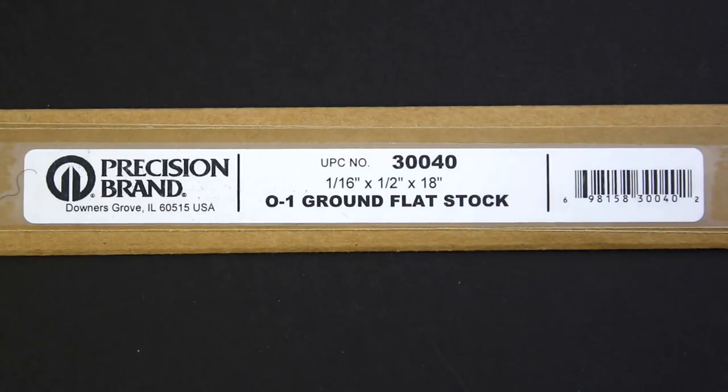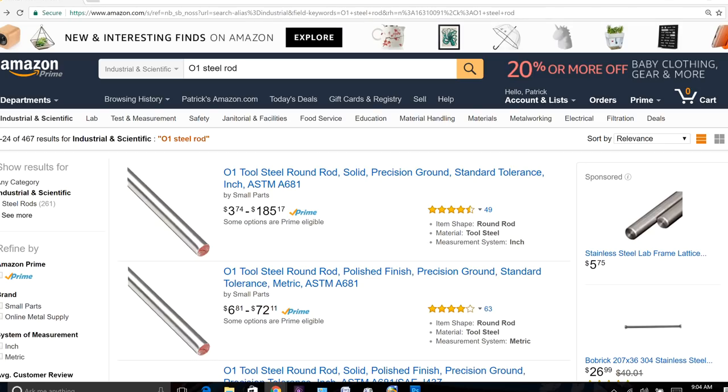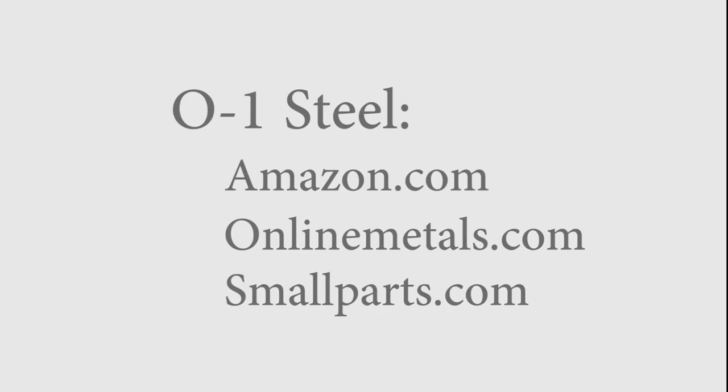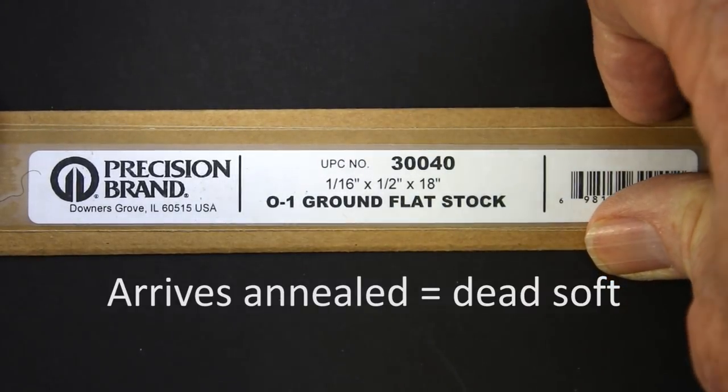Buy O1 steel from a reputable supplier. There are dozens of online sources. Amazon is a perfectly reasonable choice. I have also bought tool steel from online metals and small parts. You'll know exactly what you're getting and it comes annealed, which means dead soft or much easier shaping.